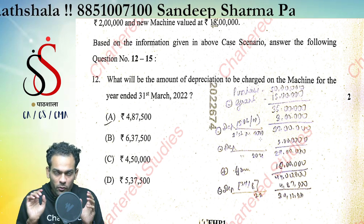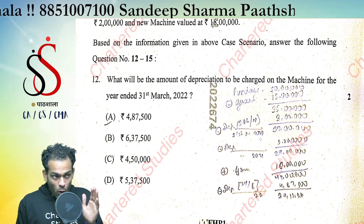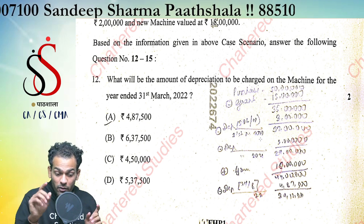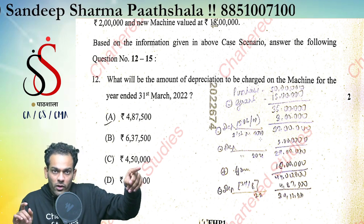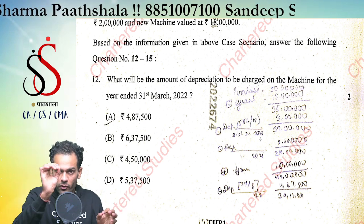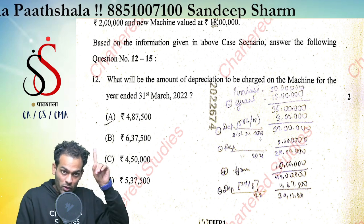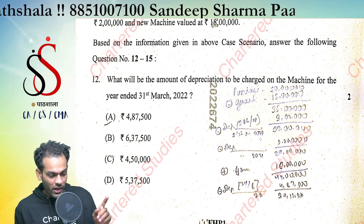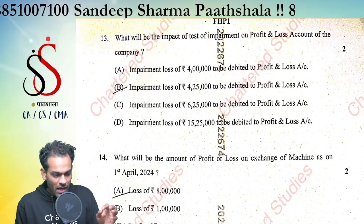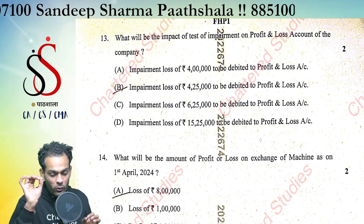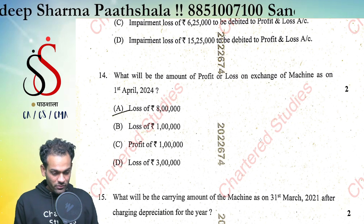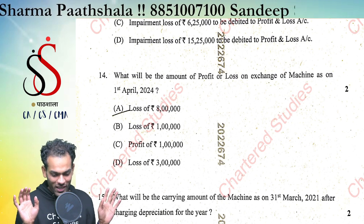To calculate depreciation for 21-22: on the 29 lakh carrying amount, the same 3 lakh depreciation applies under straight line method. Additionally, on 1st April 2021 there was a refund of grant of 15 lakh, which is apportioned over the remaining life of 8 years: 15 lakh divided by 8 = 1,87,500. So total depreciation is 3 lakh plus 1,87,500 = 4,87,500. The answer for question 13 is C — impairment loss of 6,25,000 to be debited to profit and loss account. The answer for question 14 is either a loss of 1 lakh or a loss of 3 lakh — either option B or D.